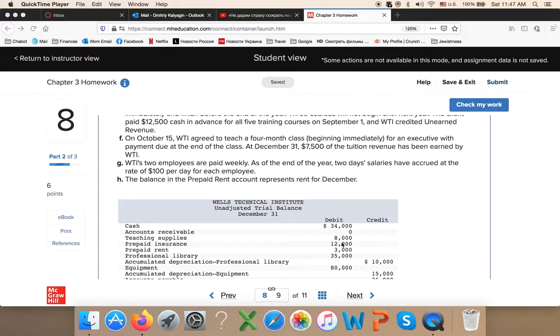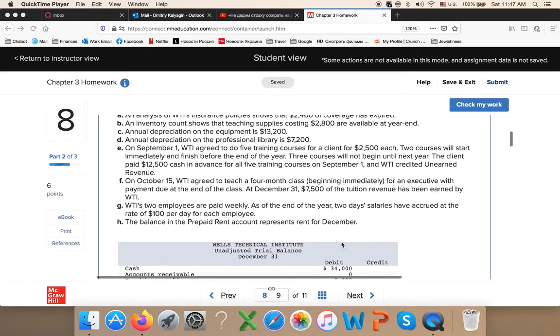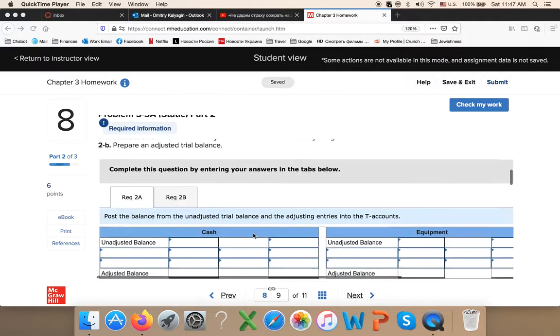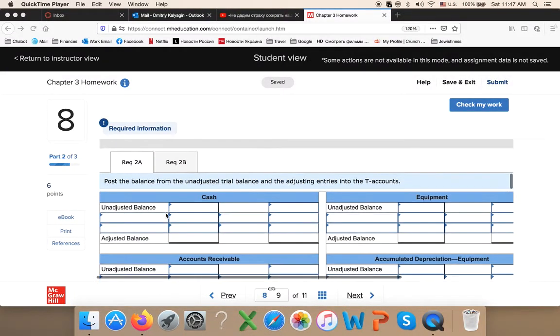Hello students, I got some questions for chapter 3 homework, question number eight and question number seven. You journalized the adjustments, now they need to go to the ledger. This is the ledger right here, requirement 2a.